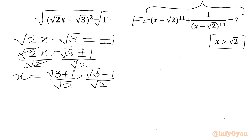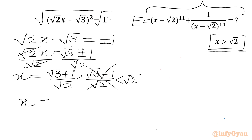Now the condition on x is that x must be greater than root 2. Checking: root 3 is approximately 1.732 and root 2 is approximately 1.414. The second value (root 3 - 1)/root 2 is less than root 2, so we reject it. The accepted value of x is (root 3 + 1) over root 2.